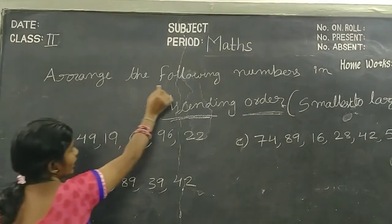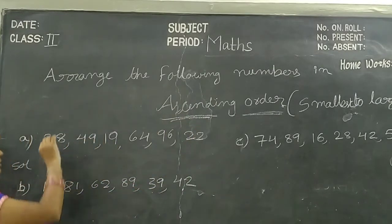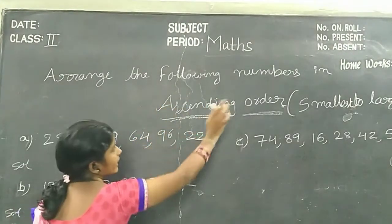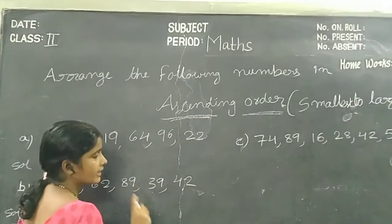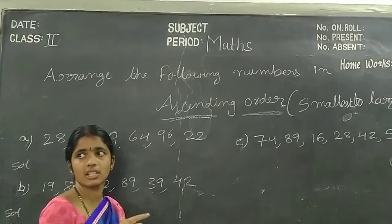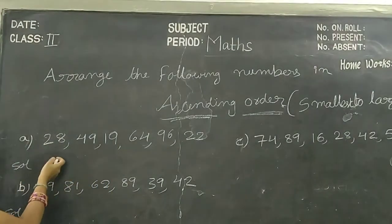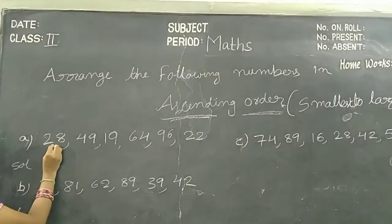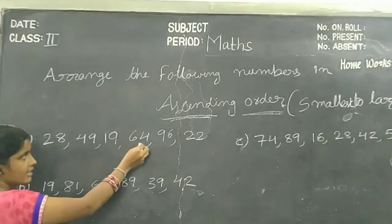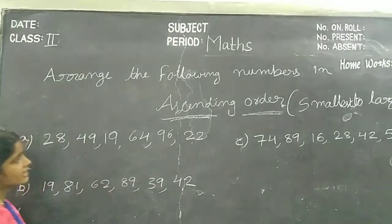Arrange the following numbers in ascending order. Children, see the question carefully: Arrange the following numbers in ascending order. Ascending order means smallest to the largest number. See the example: 28, 49, 19, 64, 96, 22.